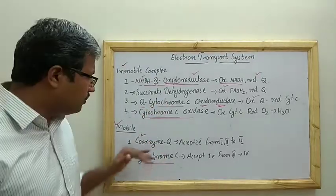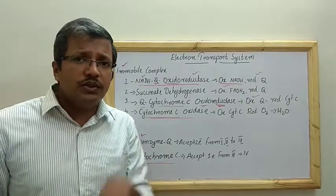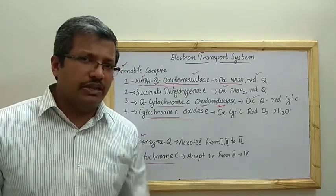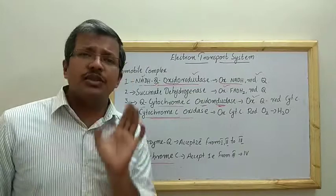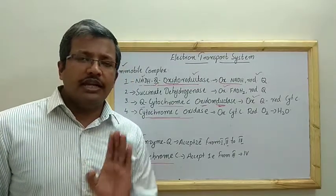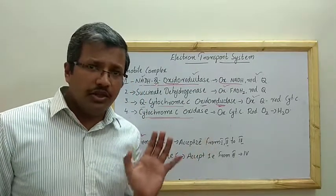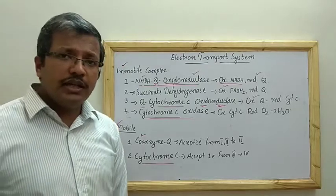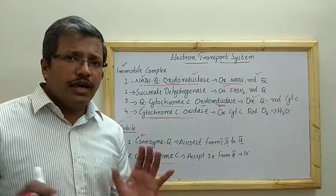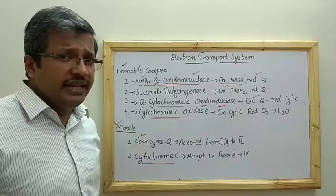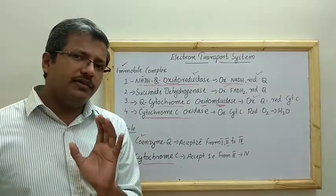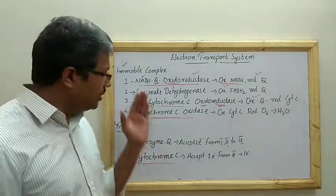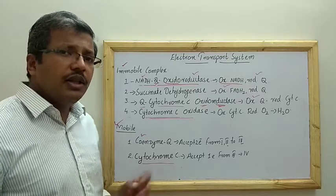The mobile complexes are: coenzyme Q, which carries two electrons at a time from complex one or two to complex three; and cytochrome C, which carries only one electron at a time from complex three to complex four. All these complexes are organized within the inner mitochondrial membrane.